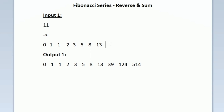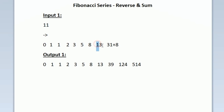The ninth term is the reverse of eight plus the reverse of thirteen. Here we have a two-digit number for the first time. After reversing eight it remains eight, but reversing 13 gives 31. So the ninth term is 31 plus 8, which equals 39.